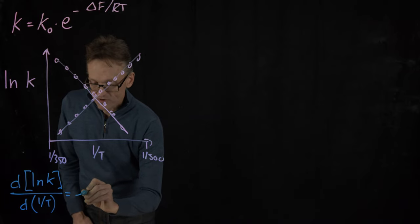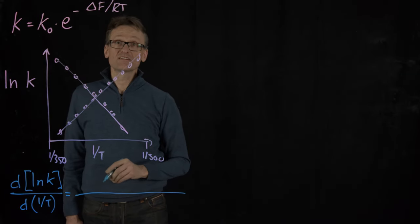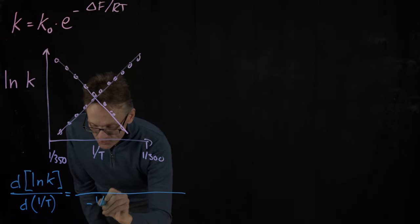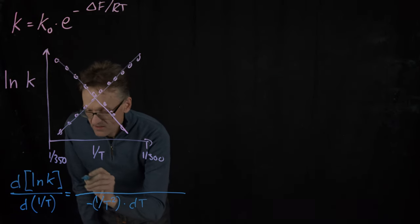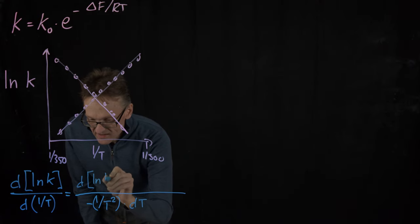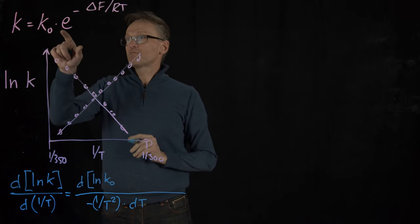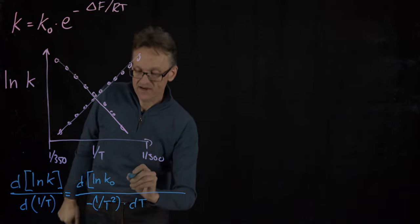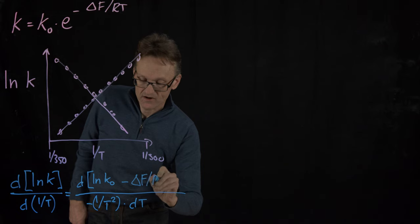That will lead to two parts. The derivative of 1 over T is minus 1 over T squared. So I'm going to get minus 1 over T squared falling out and then dT. The derivative of ln k - ln derivative of ln k₀ plus ln and exponent cancel, and then it's going to be a minus sign. So it's going to be minus delta F divided by RT.